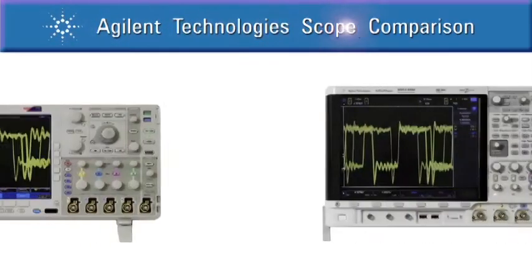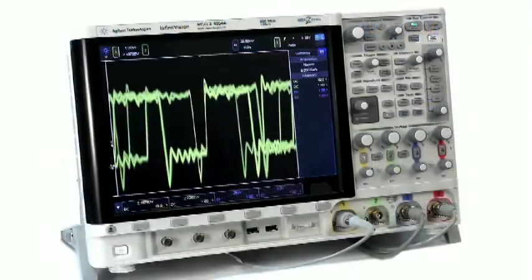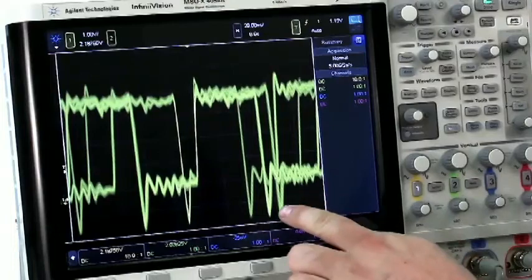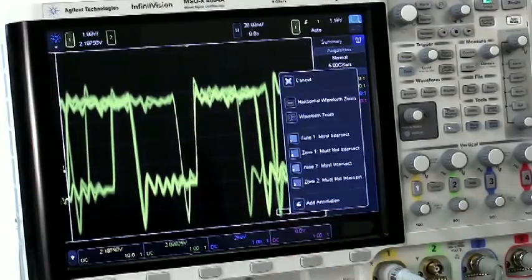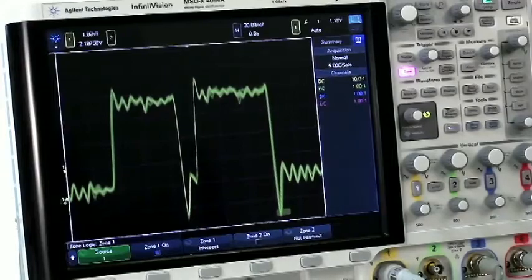Finally, let's look at triggering. In this complex signal, it would prove difficult to isolate a particular edge using traditional methods. But with our InfiniScan zone touch trigger, we can simply draw a box around an edge of interest and select zone 1 must intersect to isolate it.